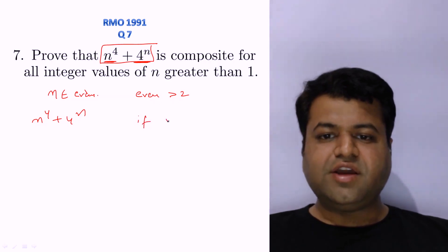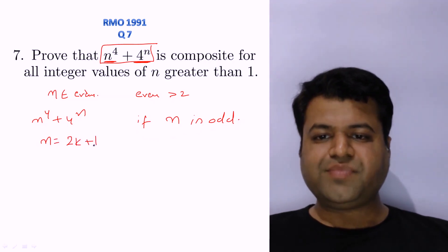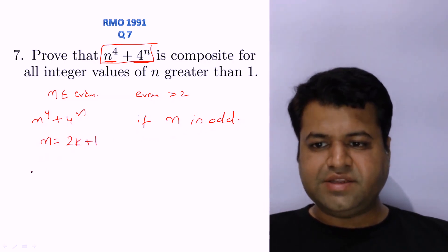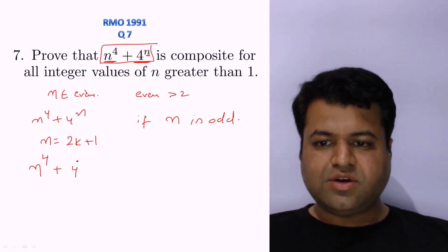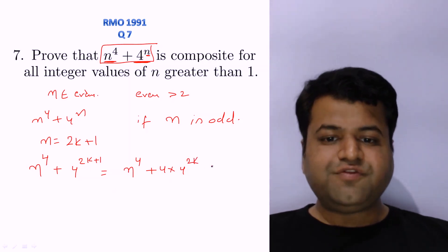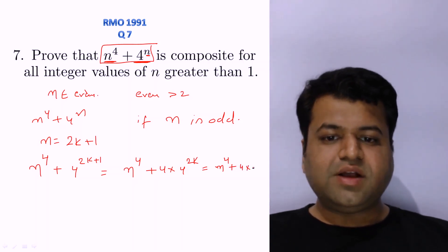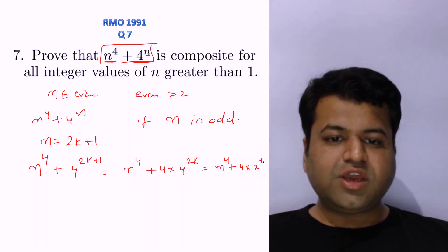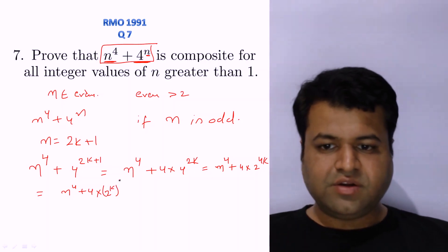Now if n is odd, let's assume n = 2k + 1. We rewrite the expression: n⁴ + 4ⁿ becomes n⁴ + 4 · 4²ᵏ, which can be rewritten as n⁴ + 4 · (2ᵏ)⁴. This sets us up to apply a well-known algebraic identity.